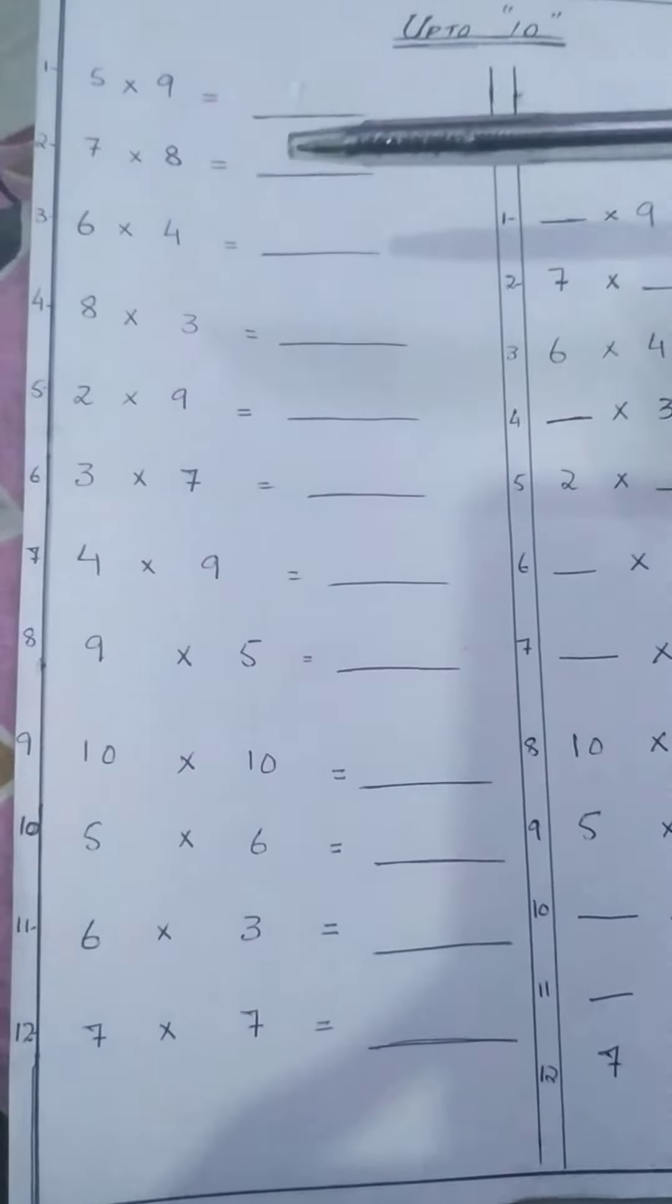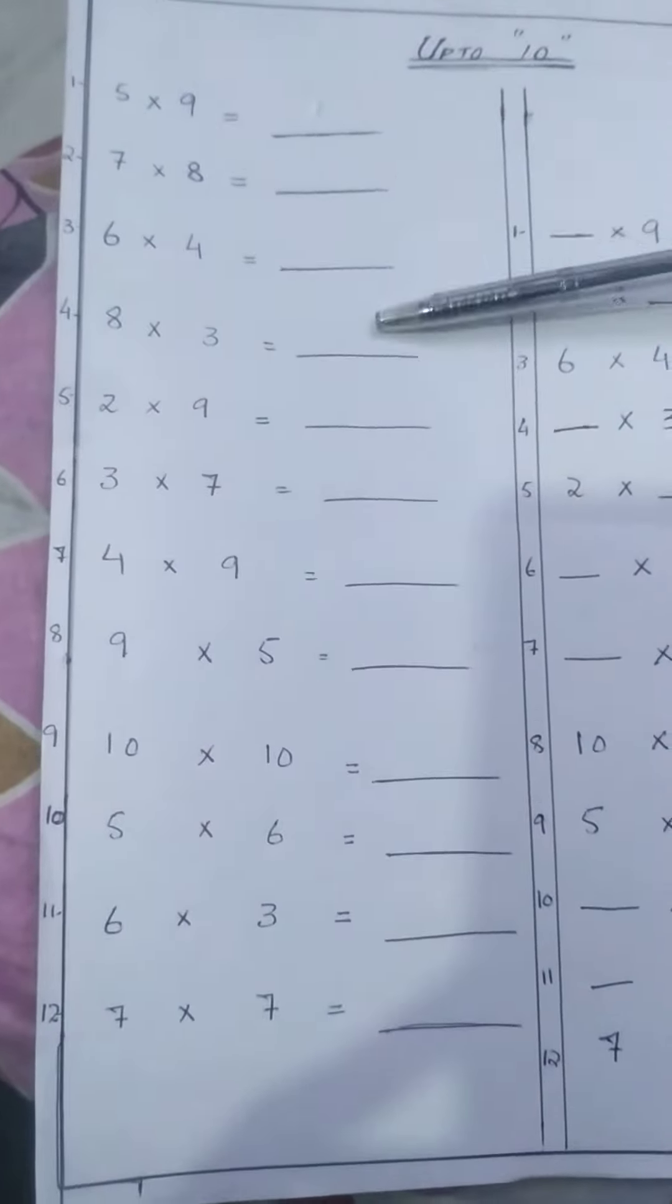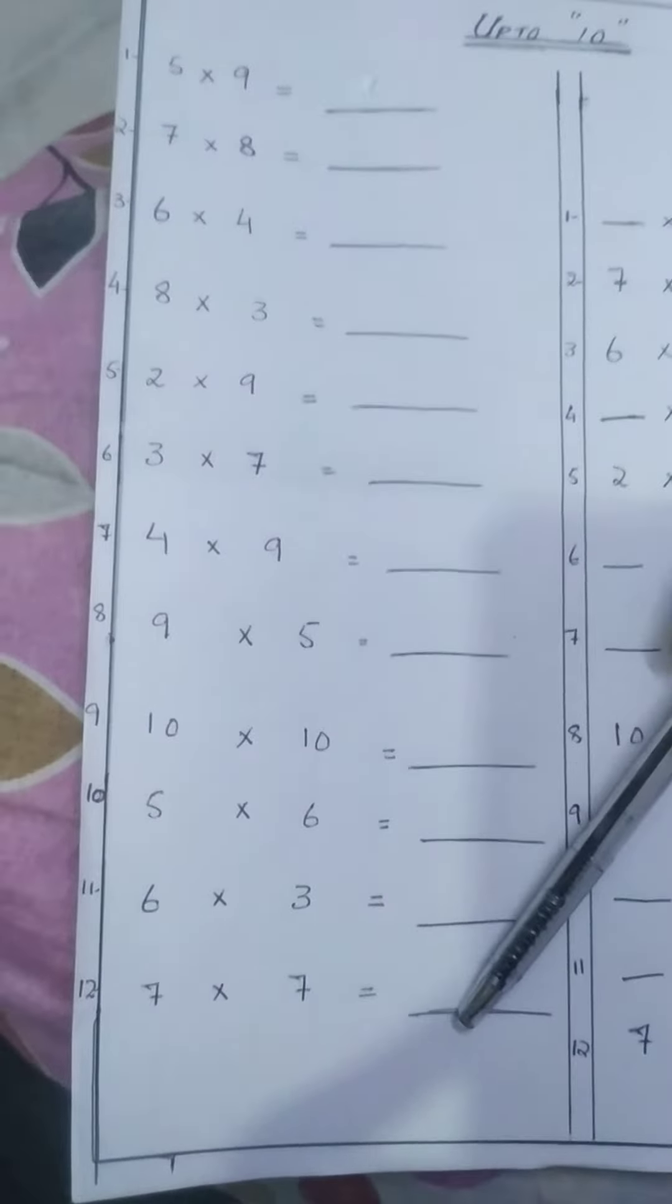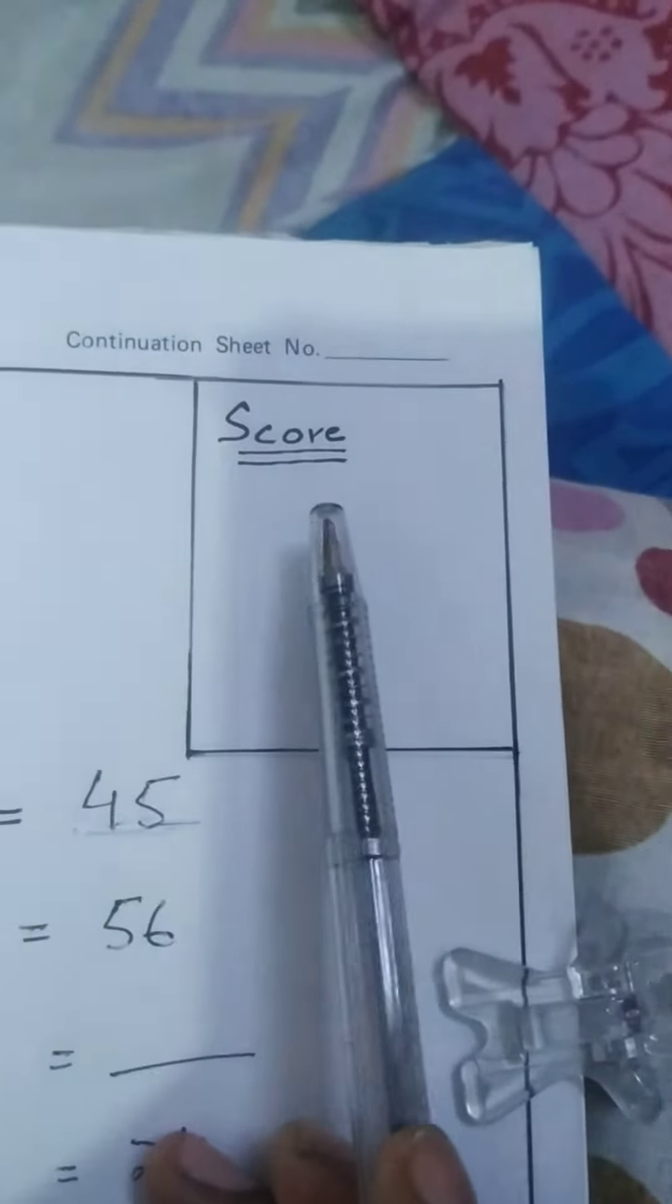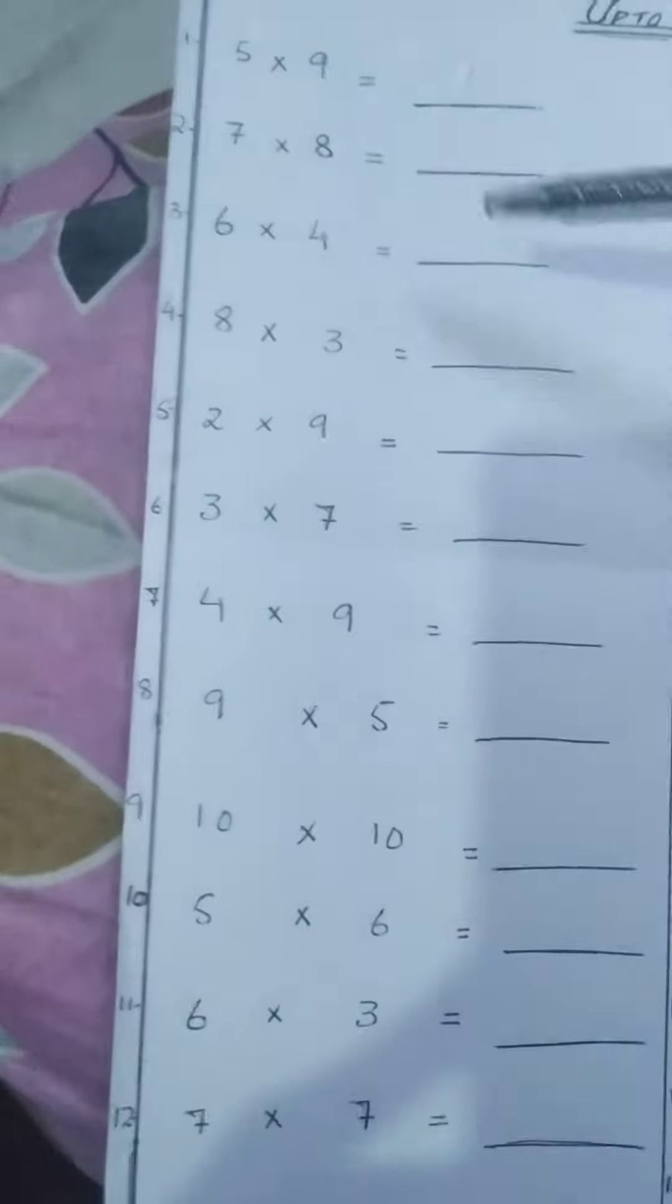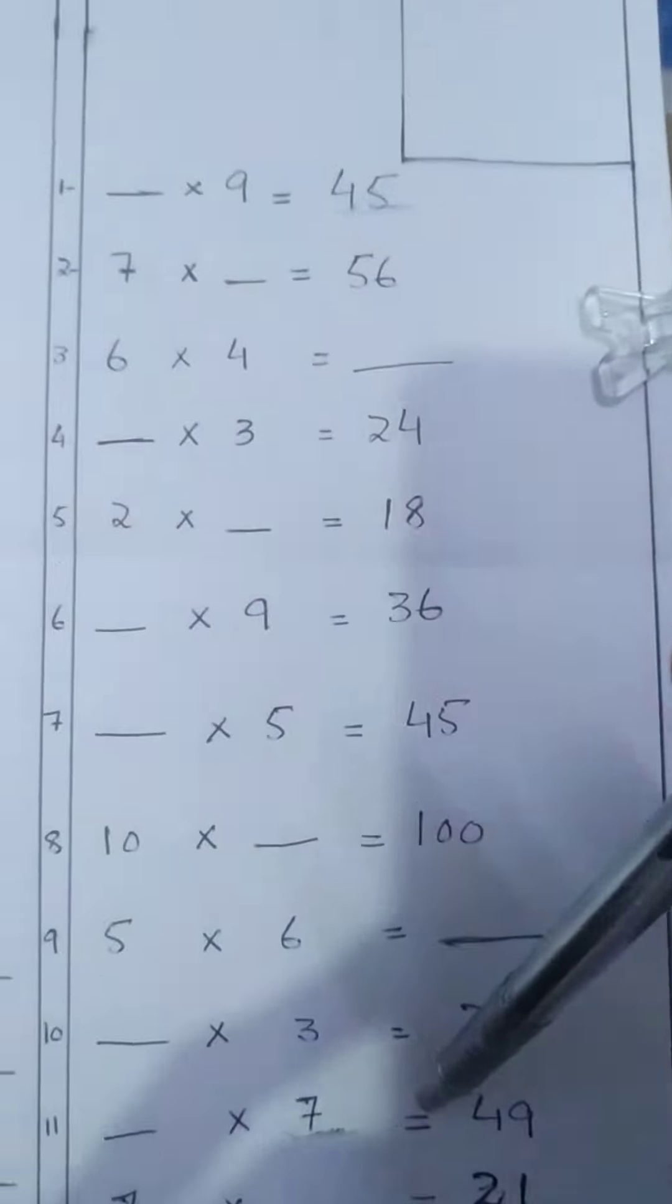Then count how many are right and how many are wrong. Then write the score in the score box after doing these 12 questions. After doing these 12 questions, there are another 12 questions.